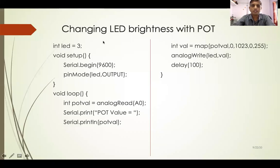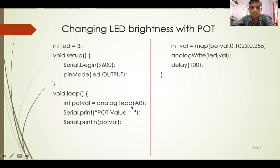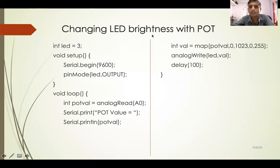In this session we are going to see more advanced interfacing. In the loop function, we are reading the analog sensor value connected to A0, and putting that value into the potval variable. The analogRead function gives a minimum value of 0 and maximum of 1023, so potval ranges from 0 to 1023. We are printing that value, and now we need to control the LED brightness using that potentiometer.